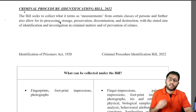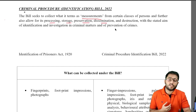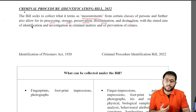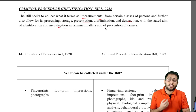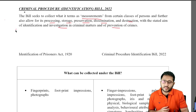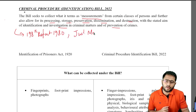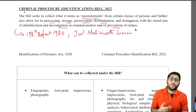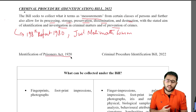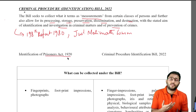The Criminal Procedure Identification Bill seeks to collect what it terms as measurements from certain classes of persons, and further allows for processing, storage, prevention, dissemination and destruction of this, with the stated aim that it is going to create a much better environment for investigation in criminal matters and prevention of crimes. Its precursor comes from the 198th Law Commission report of 1980 as well as the Justice Malimat Committee. Both these spoke about how we need to enhance the evidence collection system because the 1920 Act came so far back and there have been so many advancements in technologies.